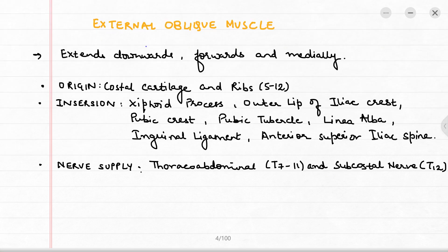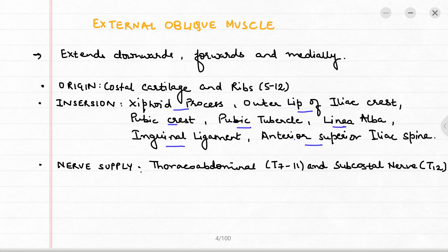The external oblique muscle extends downwards, forwards, and medially. Its origin is from the costal cartilage and the 5th to 12th ribs. The insertion is into the xiphoid process, the outer lip of the iliac crest, pubic crest, pubic tubercle, linea alba, inguinal ligament, and the anterior superior iliac spine. The nerve supply of the external oblique muscle is T7 to T12.